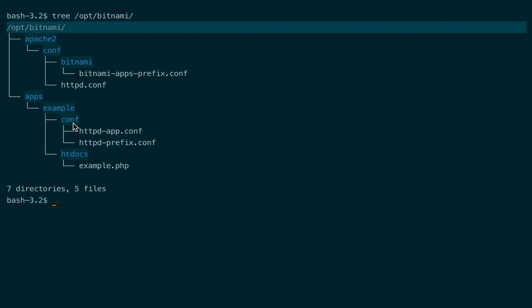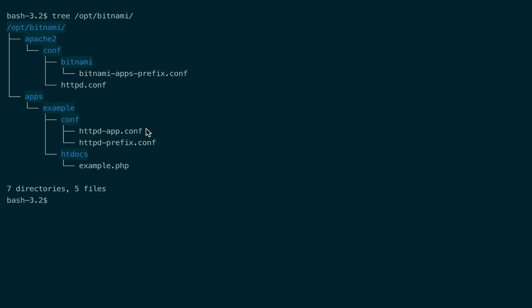Bitnami keeps a separate configuration file for the prefix options, which are used to map URLs to server folders, and the main Apache configuration file which is the httpd app file.